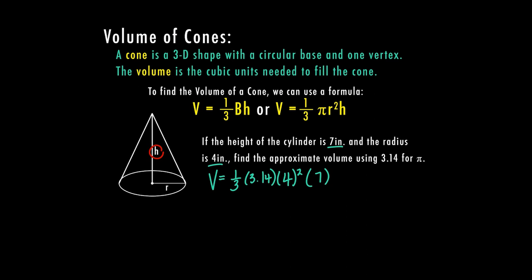So if we were just finding the volume of a cylinder, we wouldn't have the one third. So it's really the same process, except you do have to divide by three so that you get the volume of a cone and not a cylinder. So first, following our order of operations, we have to do our exponents. So now we have volume equals one third times pi times 16 times seven. If I solve this on a calculator, my volume is approximately 117.2 inches cubed.